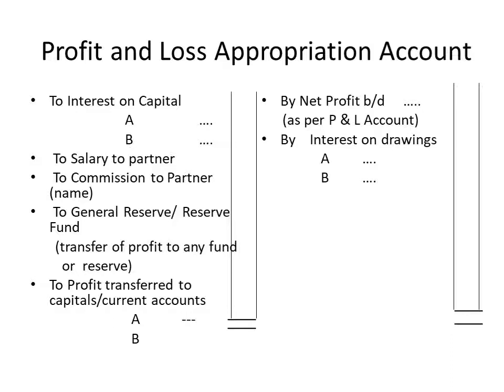For salary of partners, the entry is profit and loss appropriation account debit to salary of partners. For commission to partners, the entry is profit and loss appropriation account debit to commission to partners. For general reserves, it is profit and loss appropriation account debit to general reserve. And for distribution of profit, it is profit and loss appropriation account debit to partners' capital account or current accounts.